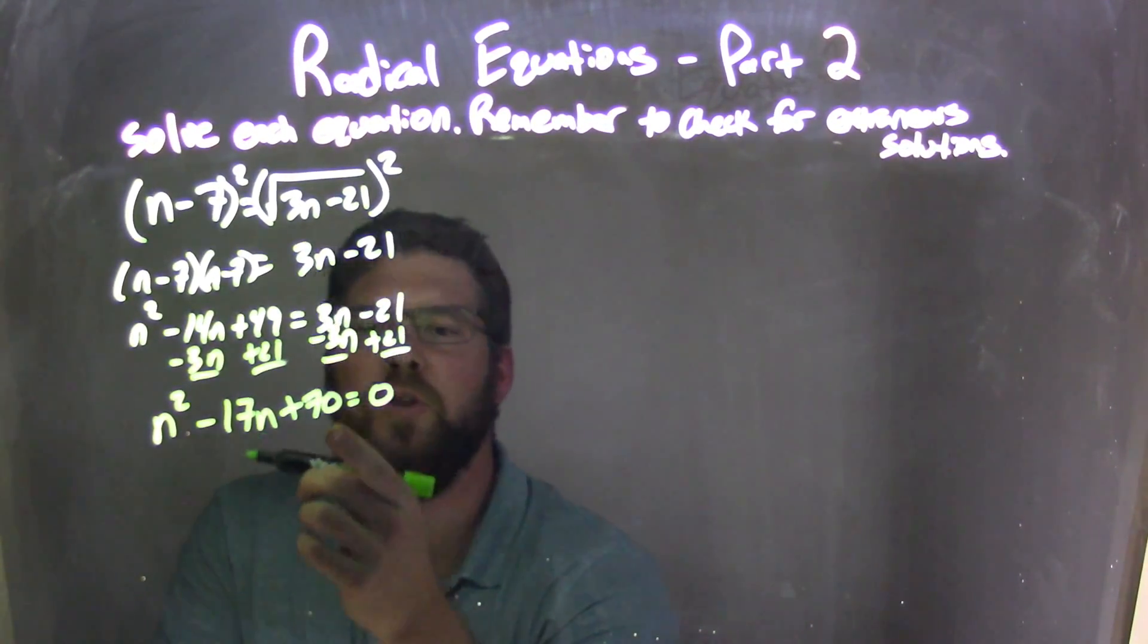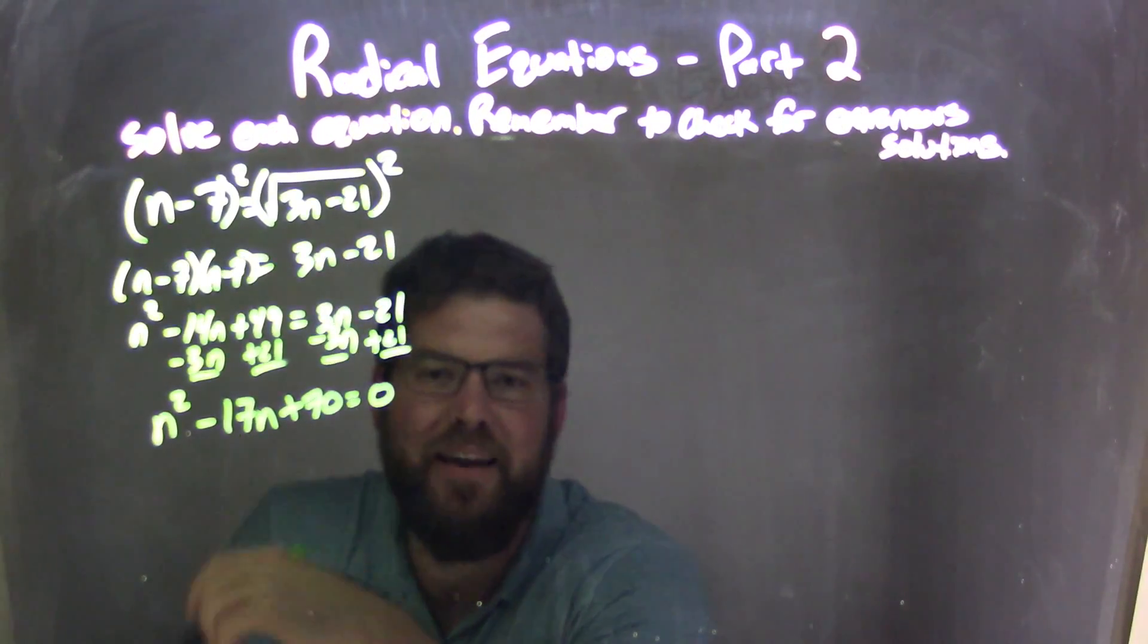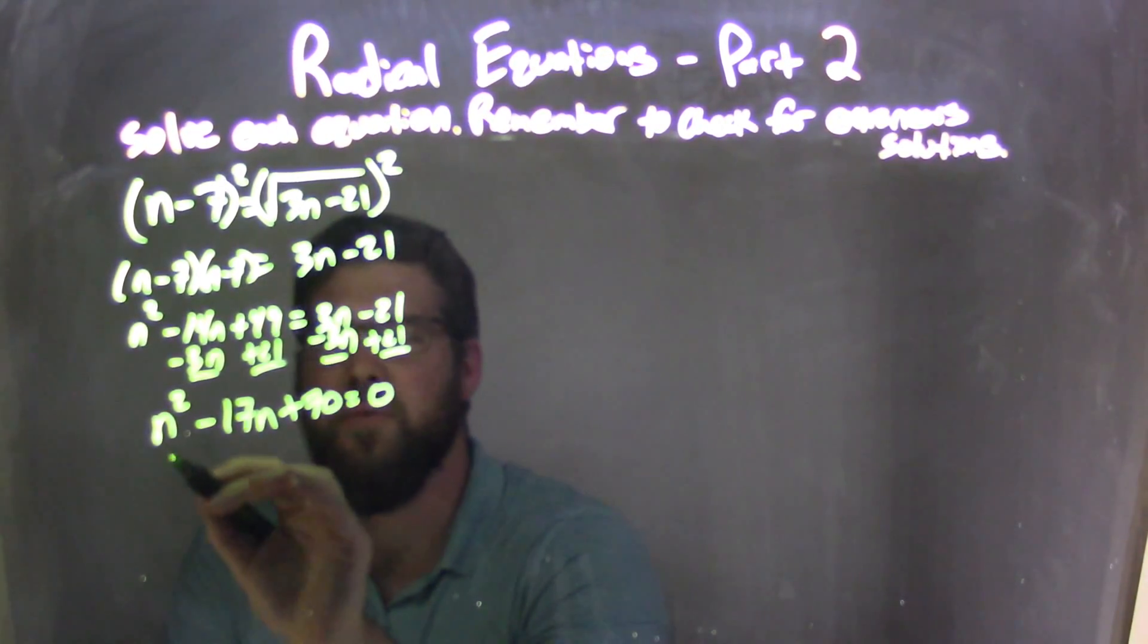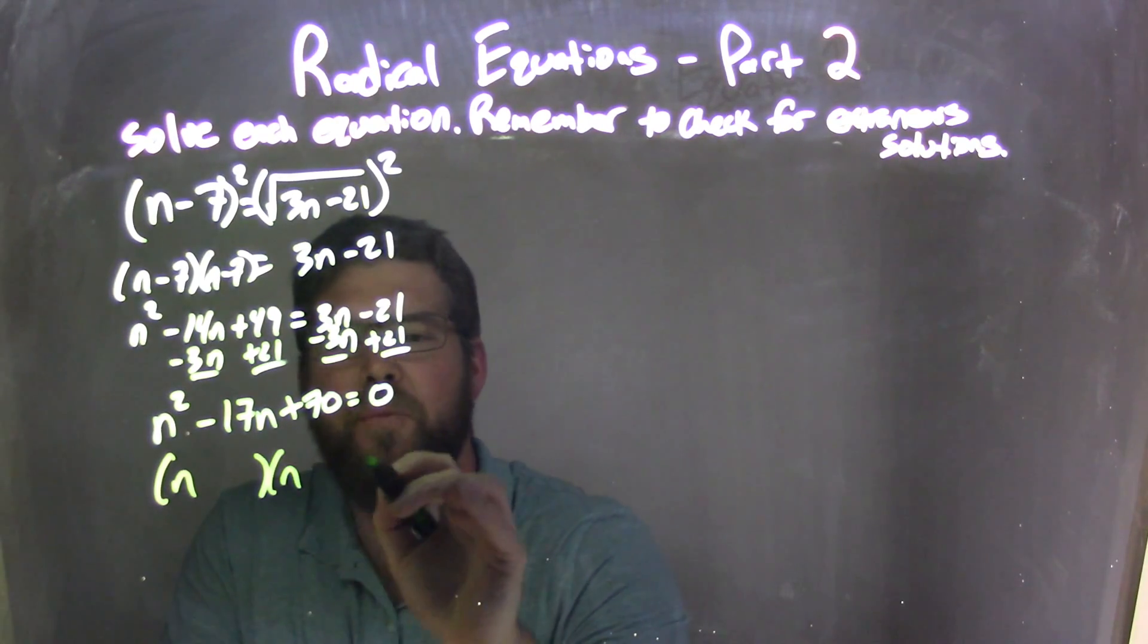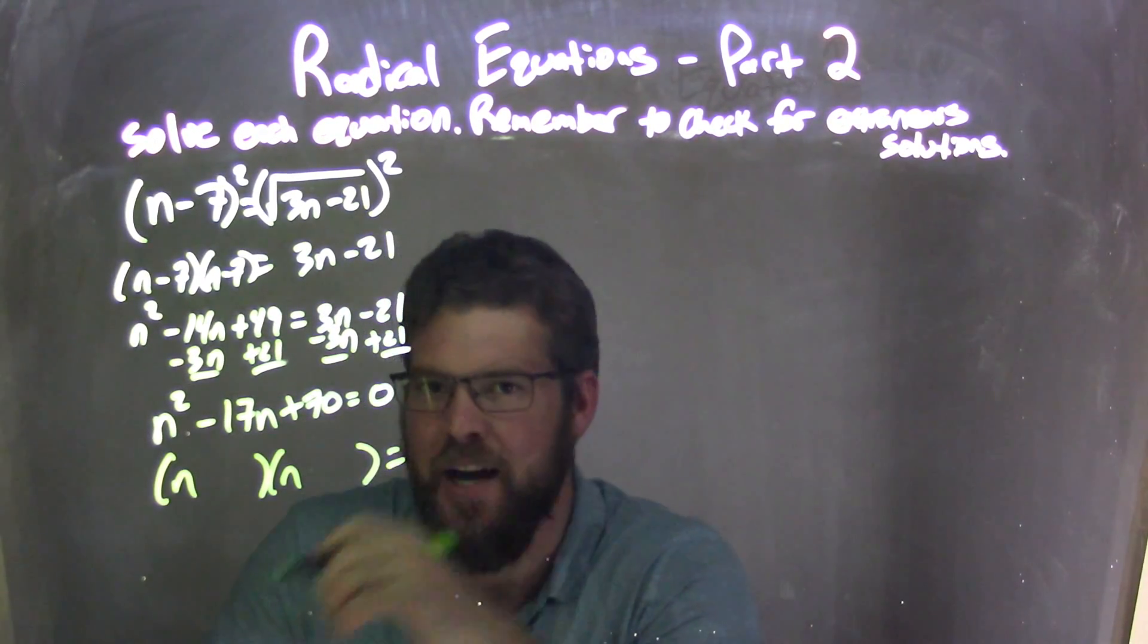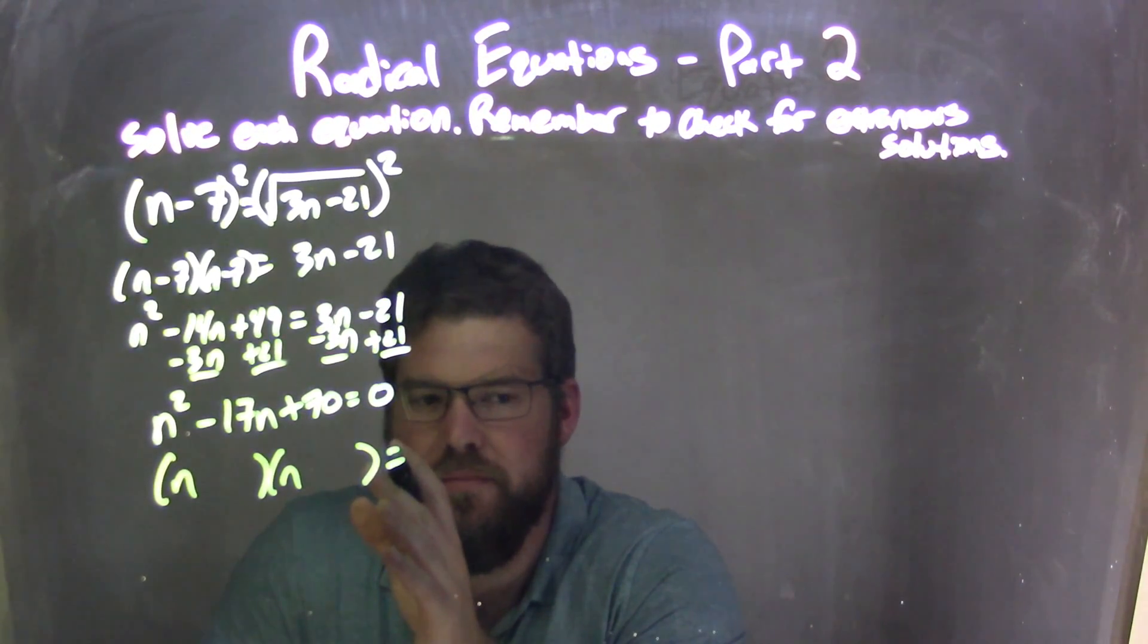Now I need to think what two numbers multiply to be 70, but add to be negative 17. It should be pretty simple, right? Can you think about it while I'm writing here? Take your time, pause, see if you can do it.